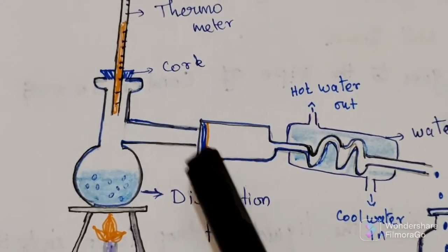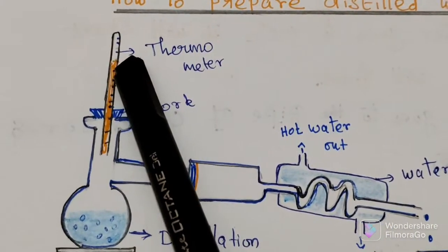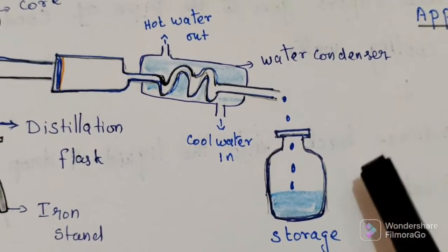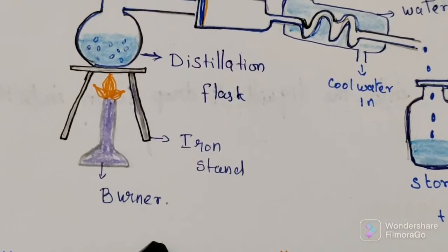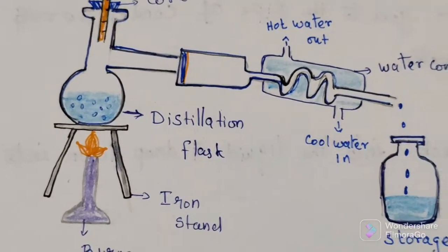Distillation flask, cork, thermometer, then water condenser, then storage tank, then this stand and burner. These are the important apparatus.